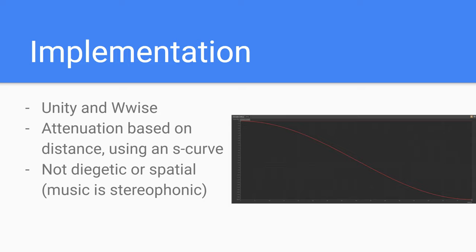For my implementation I used Unity and Wwise, but any game dev engine that plays with any audio middleware should be able to do this kind of thing, no problem. I put all the WAV files in one sound bank, initiated them to play at the same moment just at different attenuation levels, so I knew they'd be perfectly in sync. For attenuation, I used an S-curve based on the distance from each tip of the triangle for each track. For music, especially in a 2D game, it doesn't make sense for it to be diegetic or spatial, because the best sounding music is stereophonic — my guitar is actually recorded twice, hard panned left and right, which makes it sound rich and full, and in mono it just loses some of that.